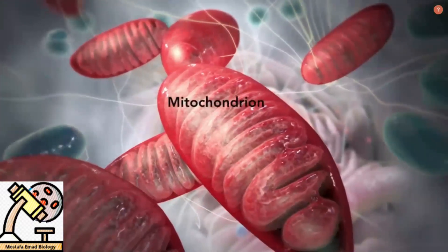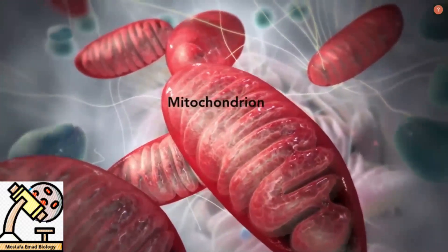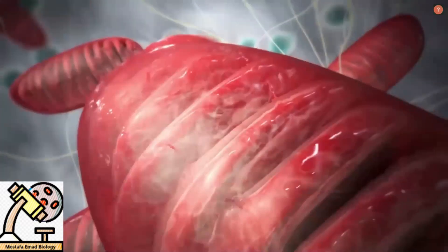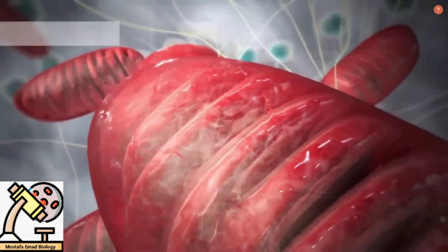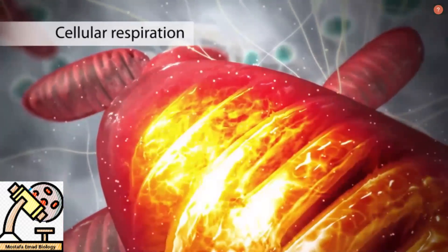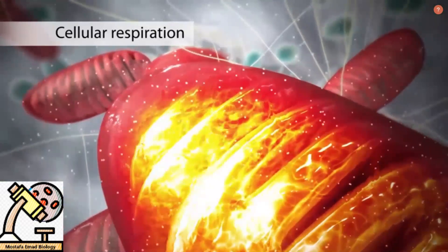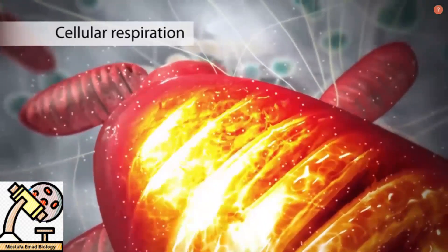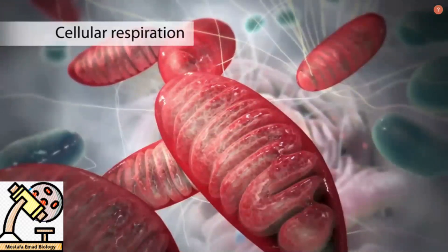The mitochondrion is an organelle that is the powerhouse for both animal and plant cells. During a process called cellular respiration, the mitochondria make ATP molecules that provide energy for all the cell's activities. Cells that need more energy often have more mitochondria.